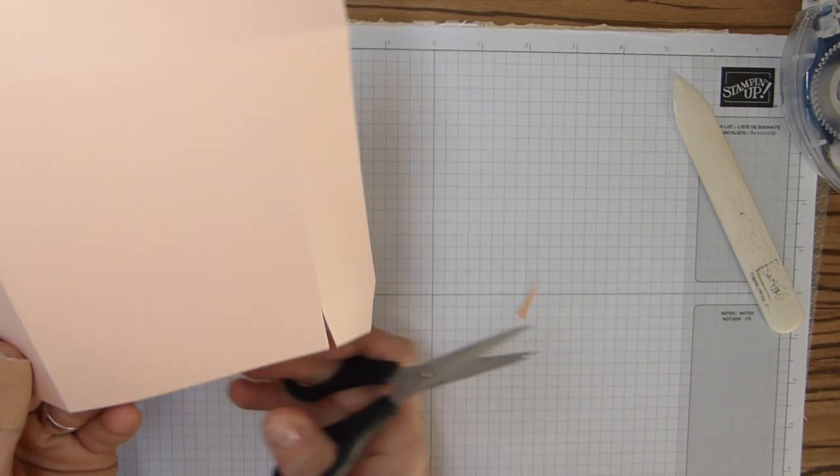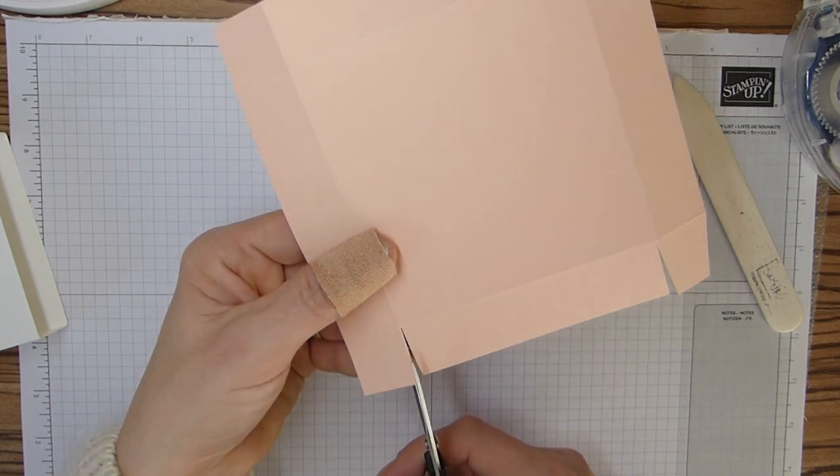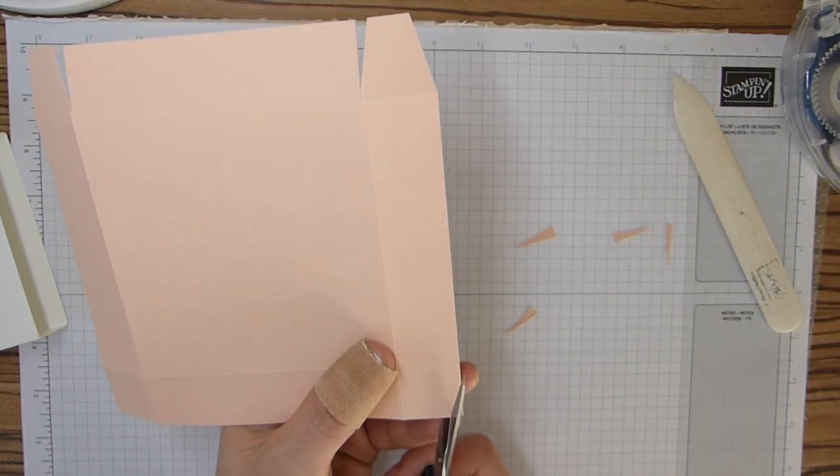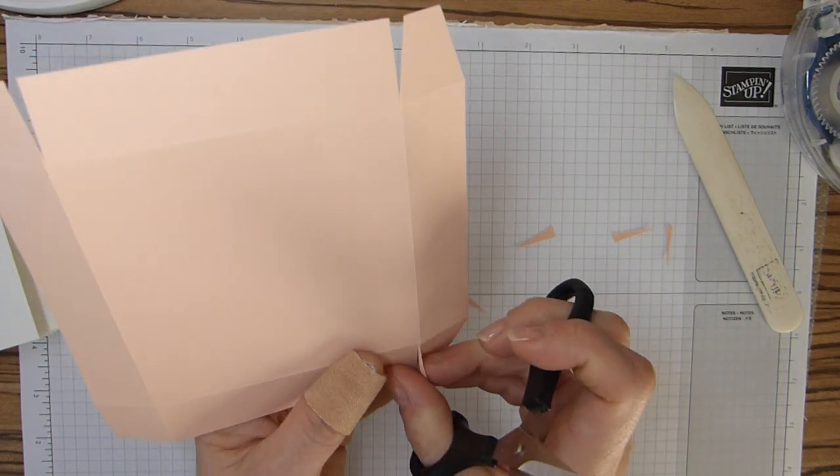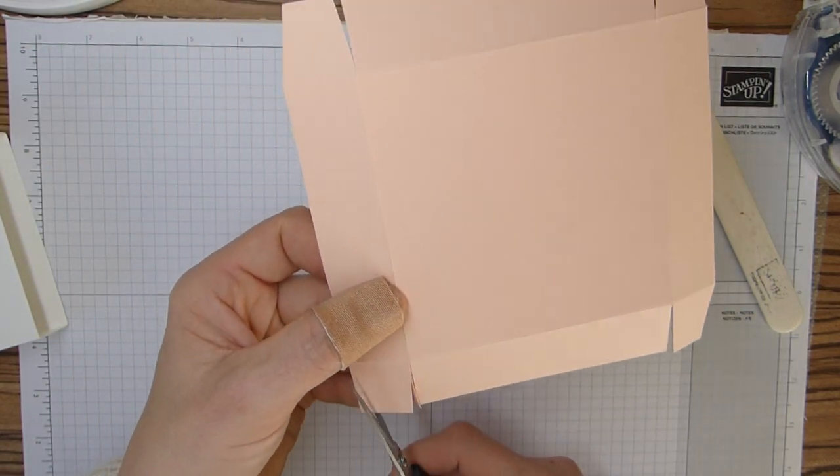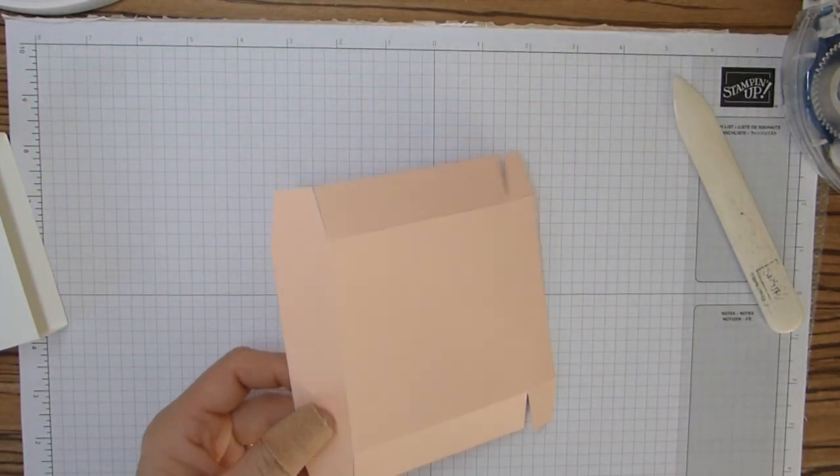Fold and burnish all of those lines, and then we're just going to cut the wedges out of all the four corners here.